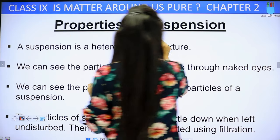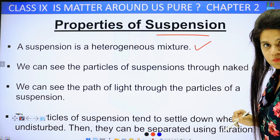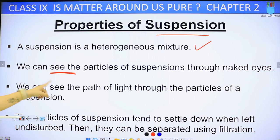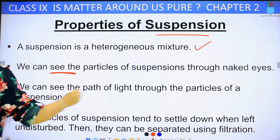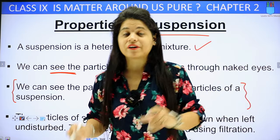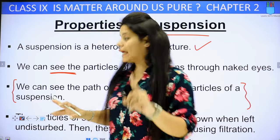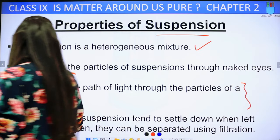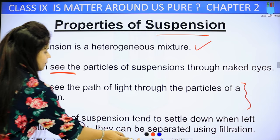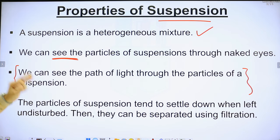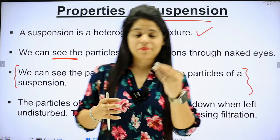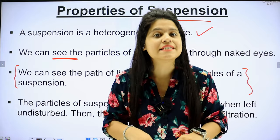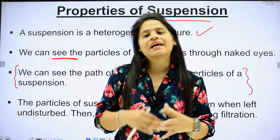Now let's talk about the properties of suspension. A suspension is a heterogeneous mixture because it is non-uniform. We can see the particles of the suspension through our naked eye. We can also see the path of light through the particles of a suspension — this is the Tyndall effect. I will show you an experiment to make this point clear. The particles of a suspension tend to settle down when left undisturbed, and then they can be separated through filtration. For example, if you have a mixture of water and chalk, keep it for 4-5 hours and all the chalk particles will settle down, and then filtration can separate them.